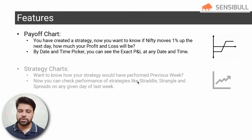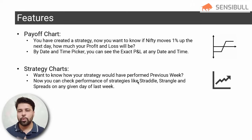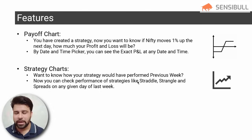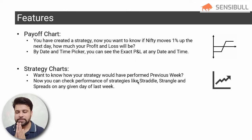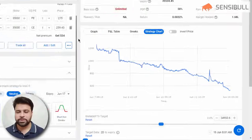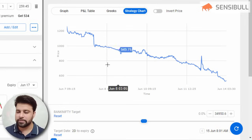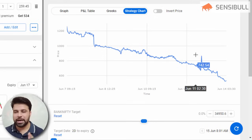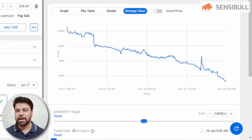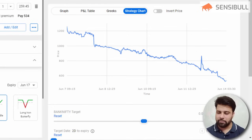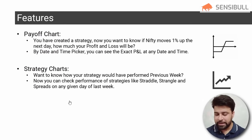The next feature is Strategy Chart. If you want to know how the strategy you've created would have performed in the previous week, you can check that in strategy charts. You can also see the combined P&L of strangle and straddle — these charts are commonly known as strangle and straddle charts. In a short straddle, I can see how the combined P&L of call and put for the 35,000 strike behaved in the past week and in the live market, helping make better trading decisions.